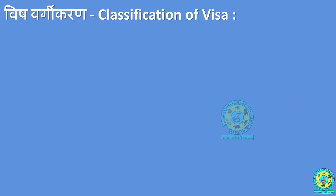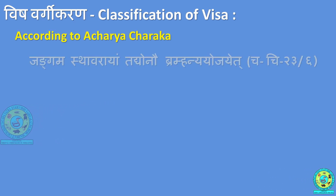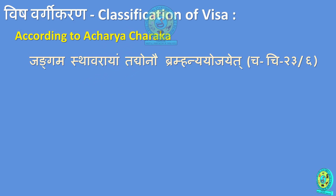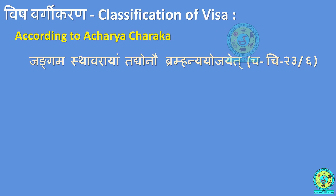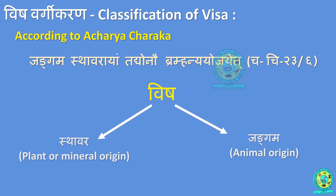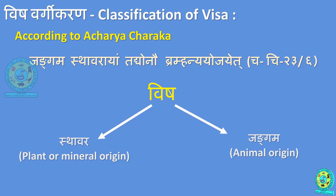Vishavargikarana is the Vargikarana or classification of Vishah. Different Acharyas have propounded different classifications of Vishah. According to Acharya Charaka, reference Charaka Chikitsa Sthana Chapter 23 Shloka 6: 'Jangama Sthavarayam Tad Yonav Brahma Nyayo Jayek.' Brahma divided Vishah into Sthavara and Jangama. Sthavara refers to plant or mineral origin poisons, while Jangama refers to poisons of animal origin.